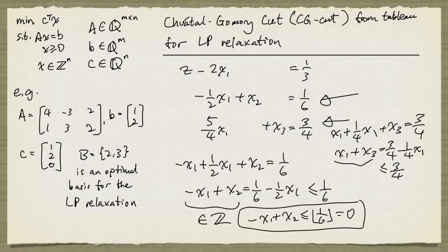Using the same reasoning as before, for every feasible solution to the integer problem, x1 plus x3 must be an integer, so x1 plus x3 less than or equal to the floor of 3/4 must be satisfied by every feasible solution to the original problem. The floor of 3/4 is 0. So we have another CG cut: x1 plus x3 less than or equal to 0.